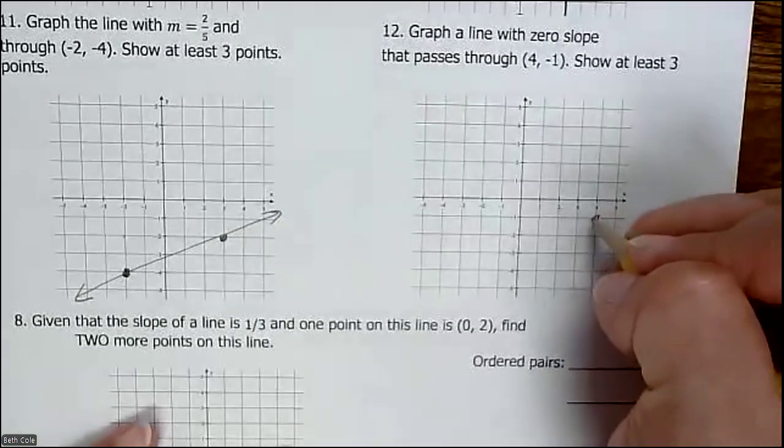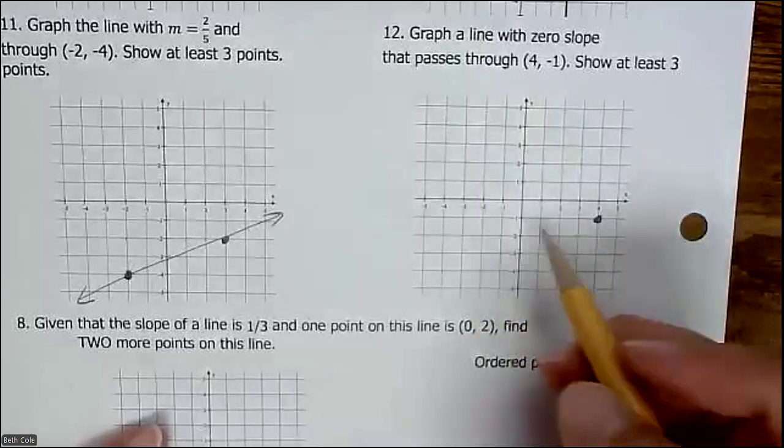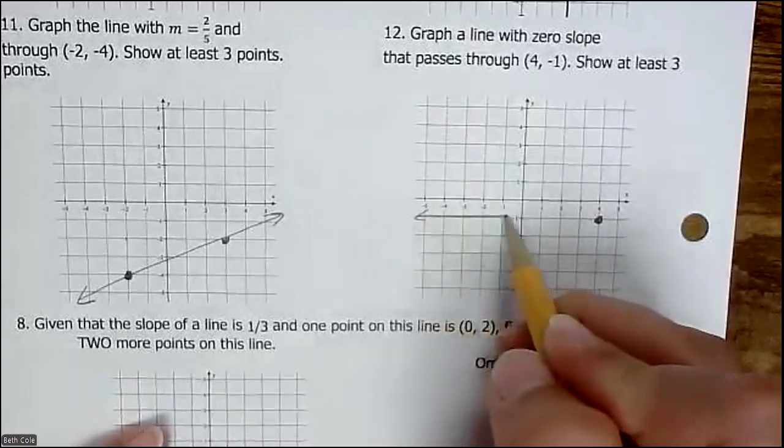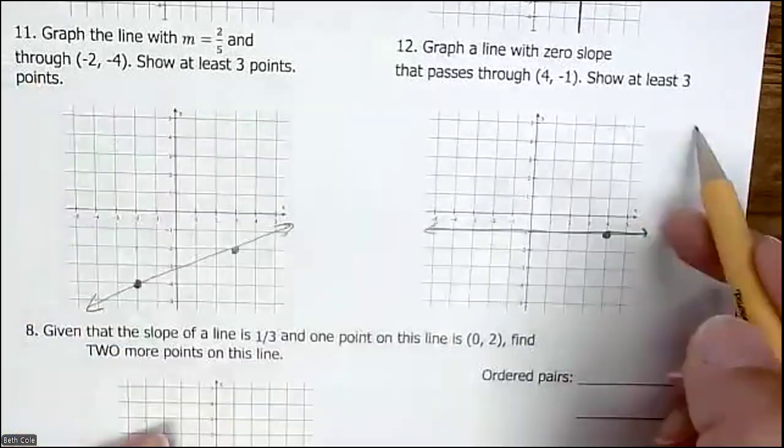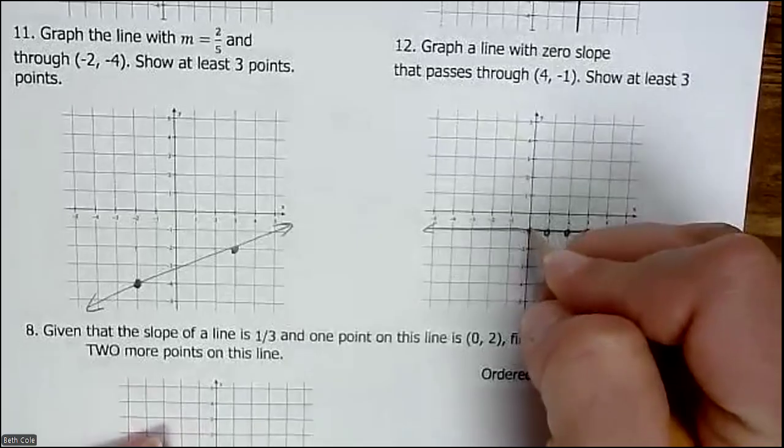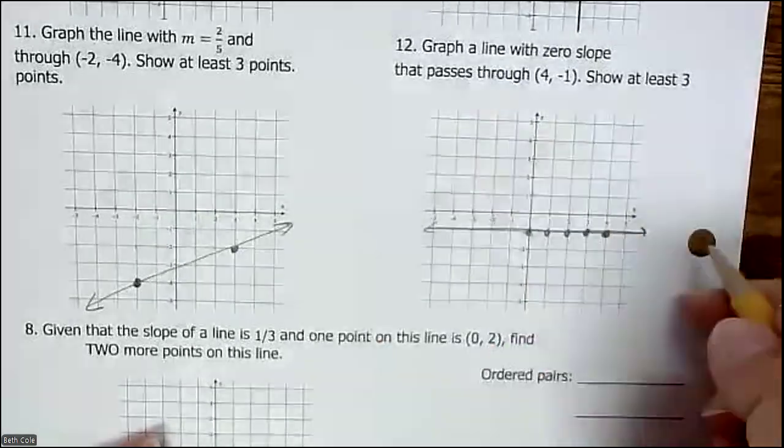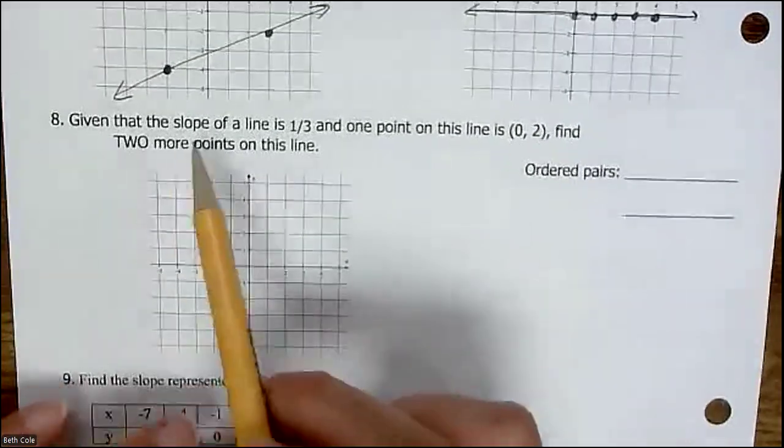Here we're going to go through the point 4, negative 1. So you go 4 for x, negative 1 for y. Zero slope is going to be horizontal, so this way. It says show at least three points. You can plot as many as you want, but it's a horizontal line, so it's going to go through all those points.